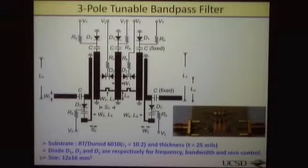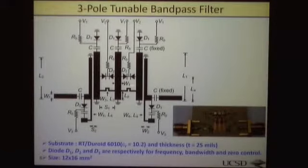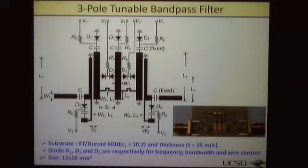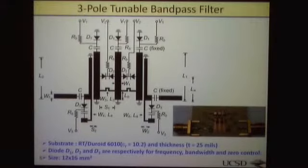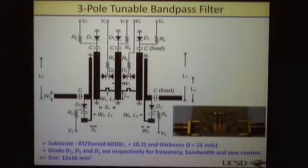This is our proposed three-port tunable bandpass filter. We have nine varactor diodes in total. The first three varactor diodes, D1, are used for frequency tuning. Two pairs of varactor diodes placed between the resonators, D2, are used for bandwidth control. The other two varactor diodes, D3, at the input and output ports are used for transmission zero creation and tuning. This filter is implemented on RT/Duroid 6010 substrate with permittivity of 10.2 and thickness of 25 mil. The overall size is approximately 12 × 16 mm².